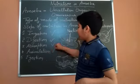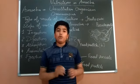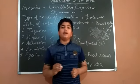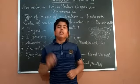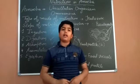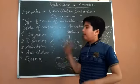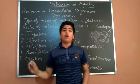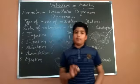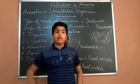The food then goes to ejection, the last step. Amoeba has no anus, so it can expel undigested food from any part of the body. The undigested food remains in the food vacuole and is then separated out from any part of the body.